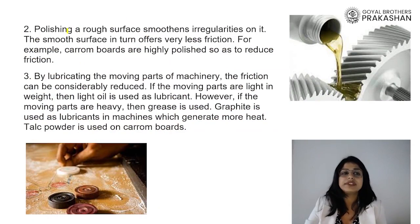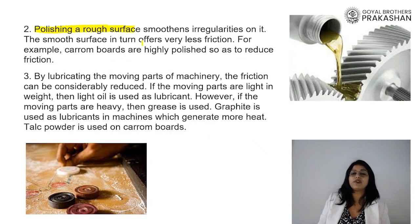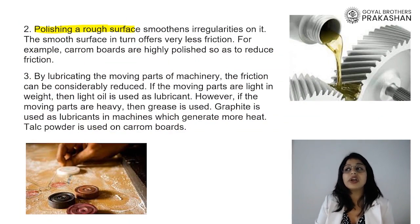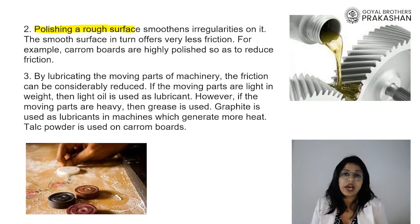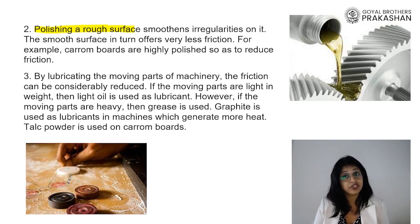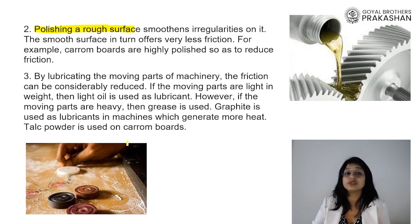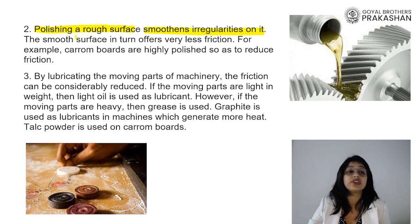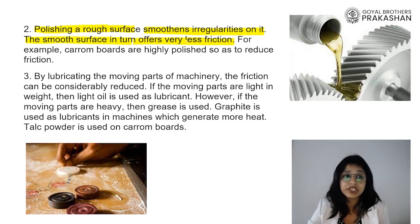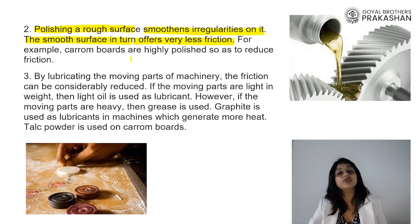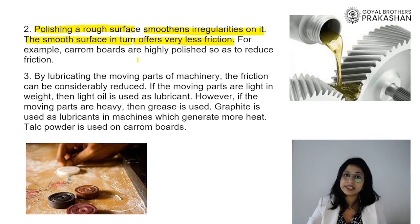Another thing we can do is simply polish a rough surface. You might have noticed that when the floor is wet after cleaning, it is very easy to slip — because friction is reduced. When you polish anything, friction reduces. So we can polish rough surfaces or smoothen their irregularities so that the smooth surface will offer less friction, and hence reduce its disadvantage.